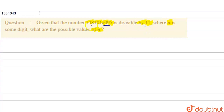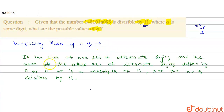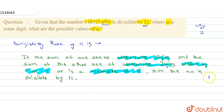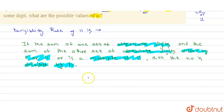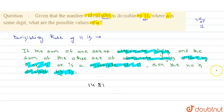The divisibility rule of 11 says: if the sum of one set of alternate digits and the sum of the other set of alternate digits differ by 0 or a multiple of 11, then the number is divisible by 11. The given number is 1481 01A 095.